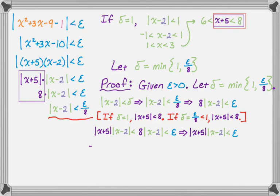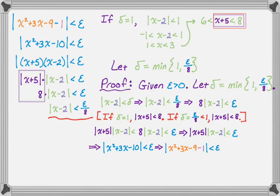Now we just do some algebra to expand, which gives us back |x² + 3x − 9 − 1|. It's always a good idea to look back at your original work to see how this should end — it should basically end where you began. So we've shown that given ε > 0, if we choose δ = min(1, ε/8), then |f(x) − 1| < ε. Therefore, the limit as x approaches 2 of x² + 3x − 9 is equal to 1, and we're done.